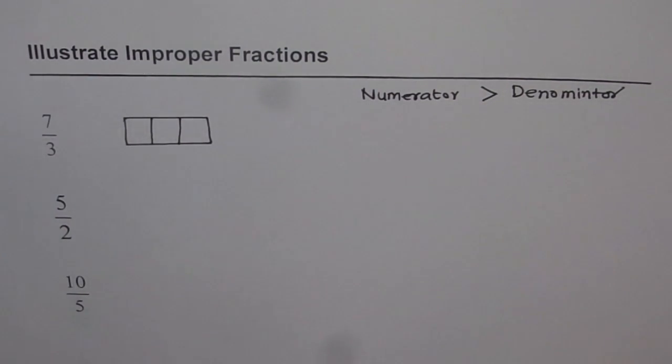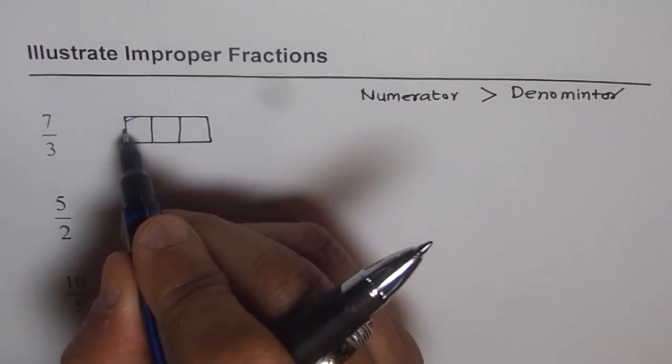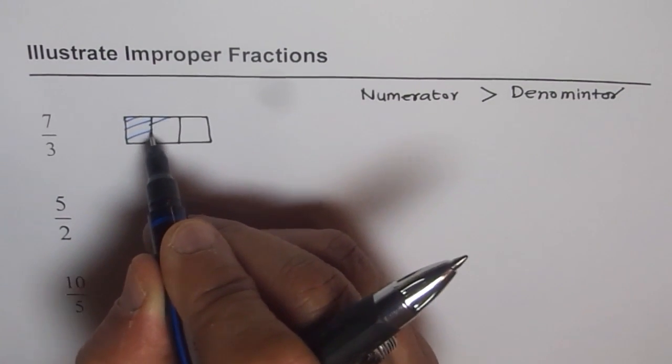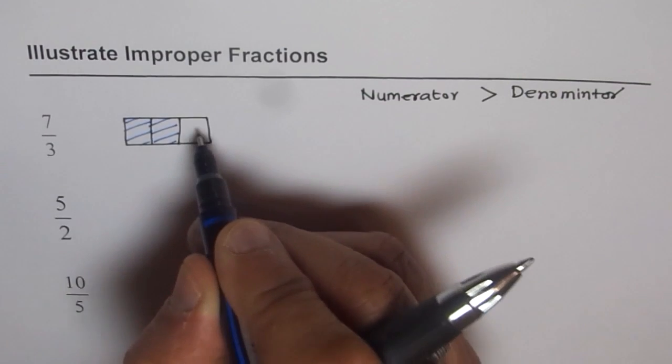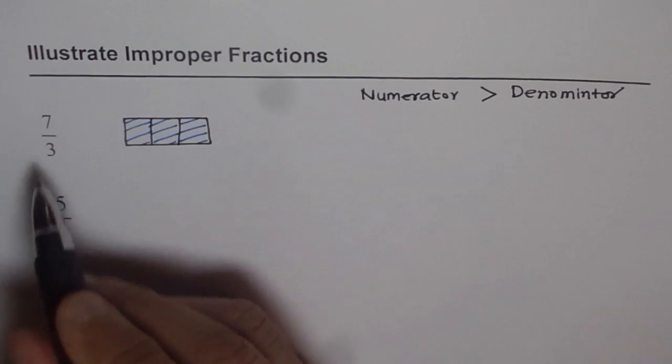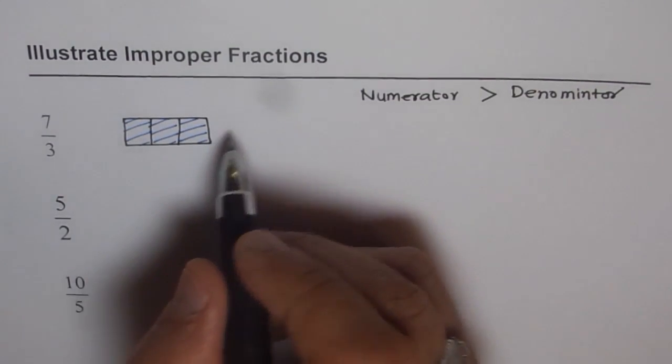Now, if I fill them all up, how many one-thirds do I get? I get 1 one-third, then I get 2 one-thirds, and 3 one-thirds. But how many do I need? I need 7. So in one block, I get only 3 one-thirds.